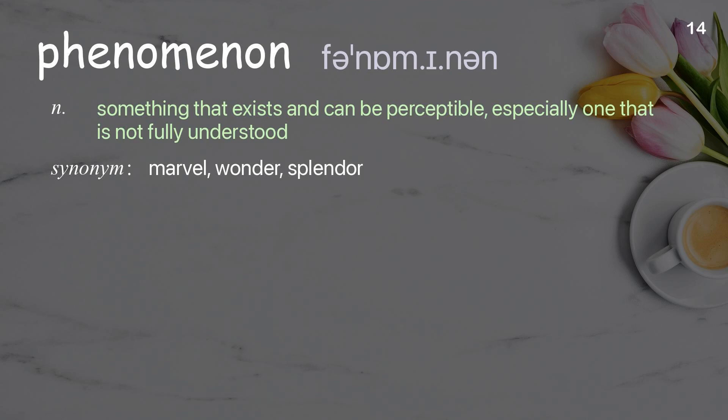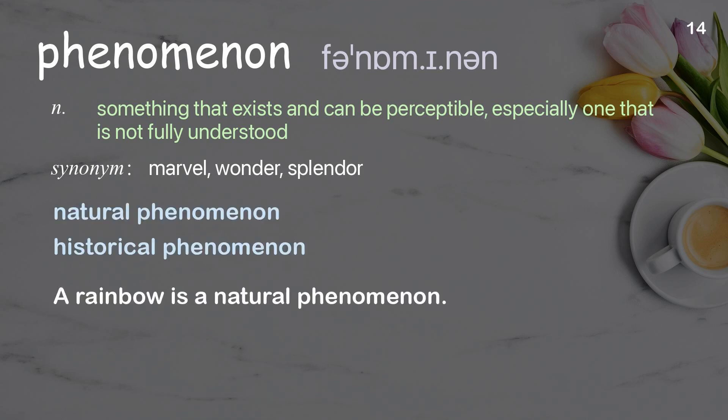Phenomenon: Something that exists and can be perceived, especially one that is not fully understood. Examples: Natural phenomenon, Historical phenomenon. A rainbow is a natural phenomenon.